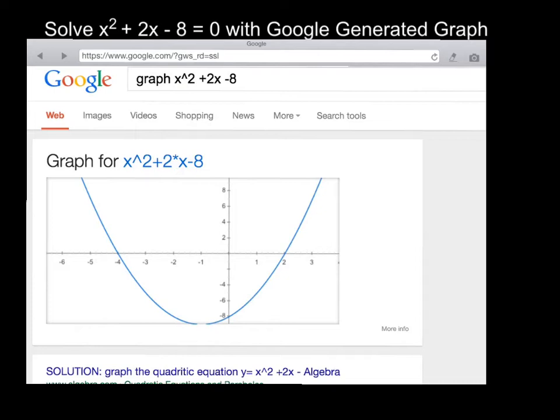And remember, I'm looking for when x squared plus 2x minus 8 is equal to 0. And from the graph, I can see that it's equal to 0 where it crosses the x-axis at negative 4 and also at 2.